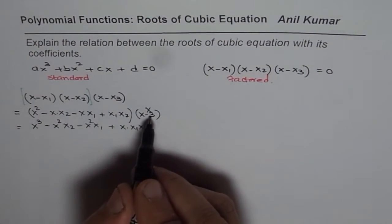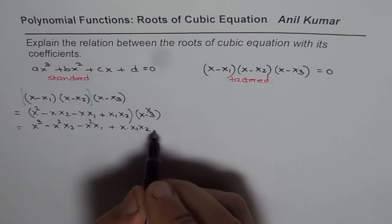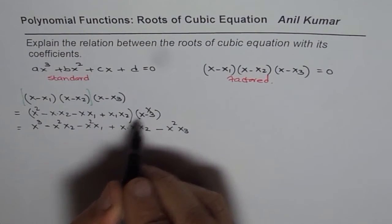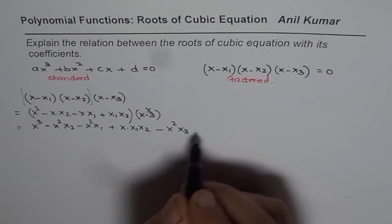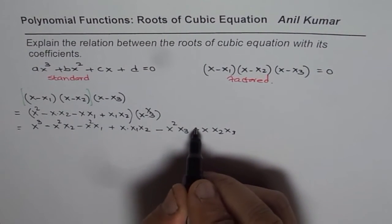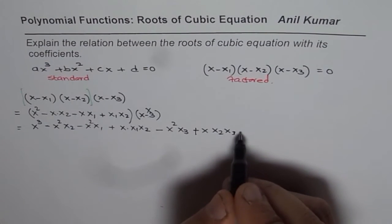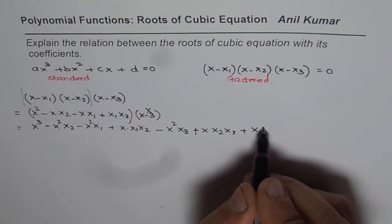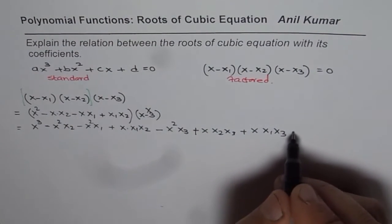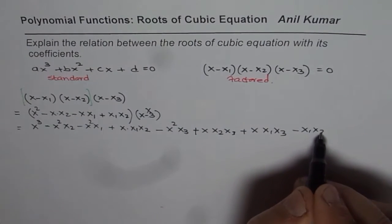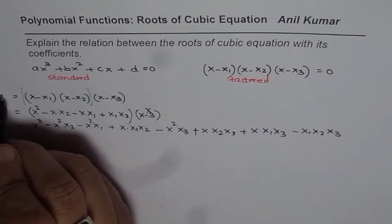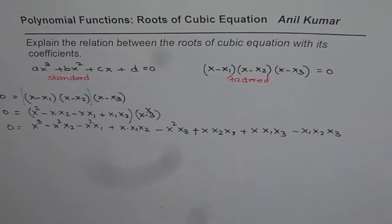Now let us multiply by x₃ with a minus sign. So when you do that you get -x²x₃, x₃ with x we get -x·x₂x₃. Minus minus x₂ makes it plus, then you get again plus x times x₁x₃, and then the last is -x₁x₂x₃. Now all this is actually equal to 0. So that is how you get your factored form.